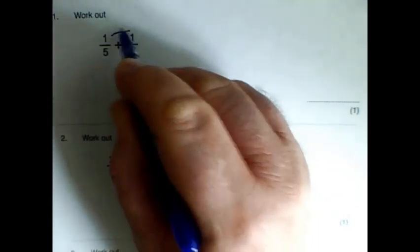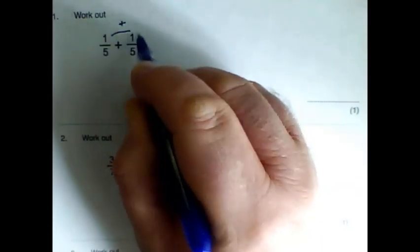What I then do is just add the top numbers together. So 1 add 1 is 2, and because the denominators are the same, you just keep the same denominator.